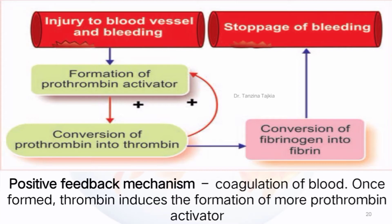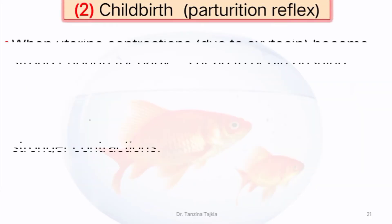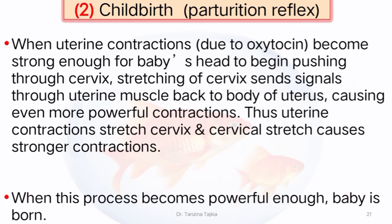This figure shows the coagulation of blood as a positive feedback mechanism. Second, childbirth: when uterine contractions due to oxytocin become strong enough for the baby's head to begin pushing through the cervix, the stressing of the cervix sends signals through uterine muscle back to the body of the uterus, causing even more powerful contractions. Thus, uterine contractions stress the cervix, and cervical stress causes stronger contractions.